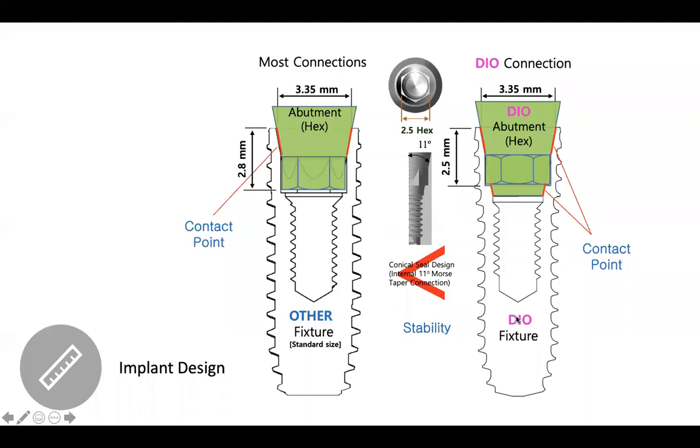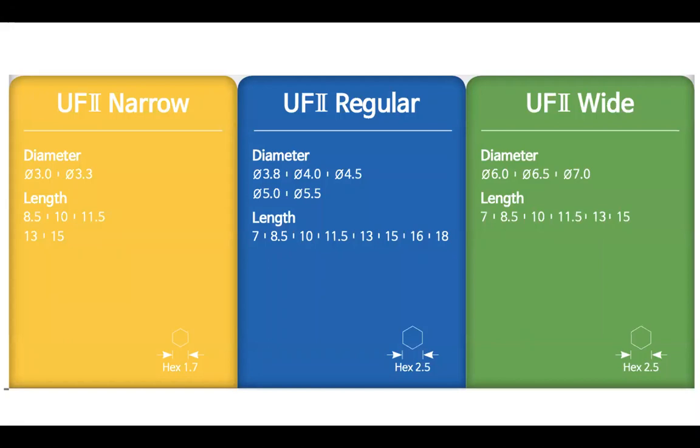This is their portfolio of implants. They have a narrow platform, it's a 1.7 millimeter hex platform. The diameters of the implants are 3.0 and 3.3. And they start at an 8.5 length, go to 15. And then they have a regular and a wide. The regular and wide share the same size platform. So it's 2.5 millimeter platform. And the diameters range from 3.8 all the way up to 7.